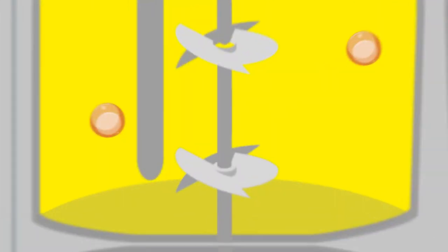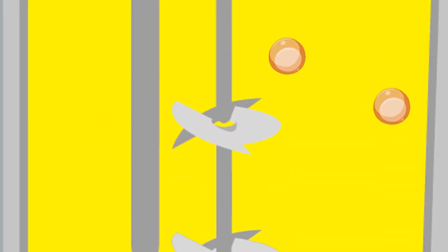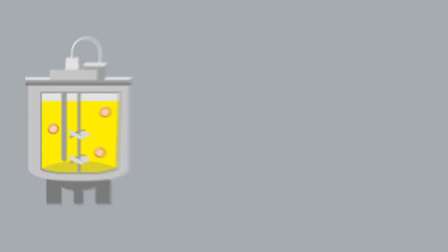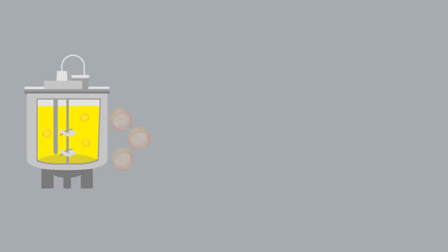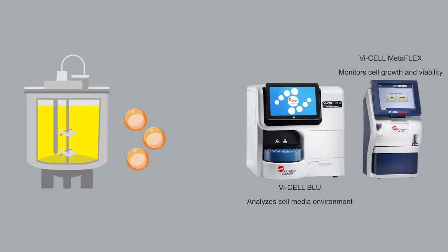Scientists grow cells which produce gene therapy vectors in a bioreactor. During the process, cell growth and viability is monitored along with the surrounding media and metabolites. Maintaining optimal, consistent growth parameters can maximize production and help mitigate resource waste.